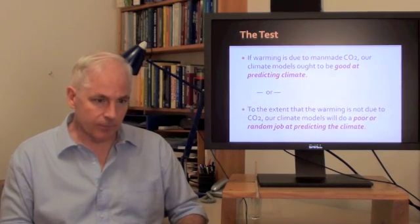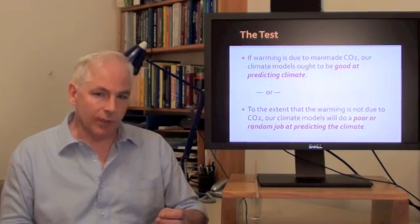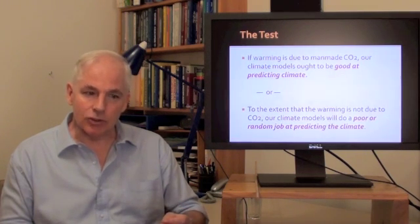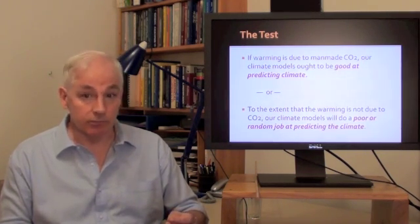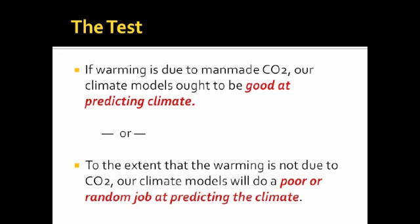So here's the test. If warming is due to man-made CO2, our climate models ought to be pretty good at predicting climate. On the other hand, to the extent that the warming is not due to CO2, our climate models will do a poor or fairly random job of predicting the climate.